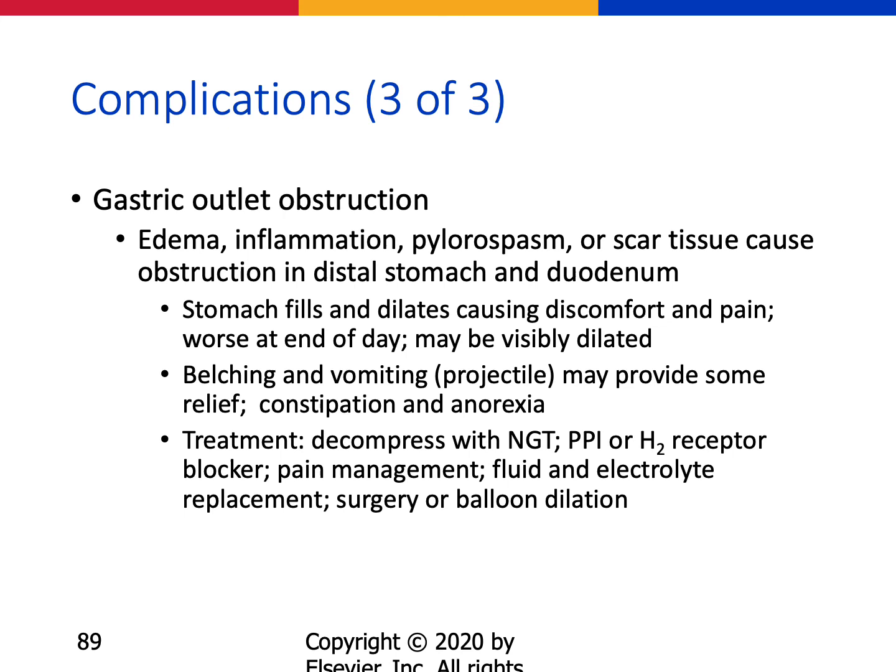Gastric outlet obstruction is the third complication, more specific to peptic ulcer disease. Edema, inflammation, spasm, or scar tissue can obstruct the distal stomach, causing the stomach to fill and dilate, worsening discomfort and pain, and possible projectile vomiting. Treatment is NG tube decompression, acid-reducing medications, pain management, and preparing the patient for surgery to dilate the opening.